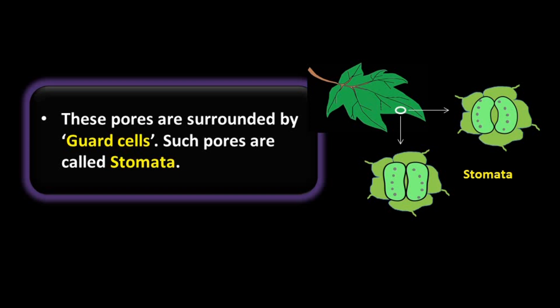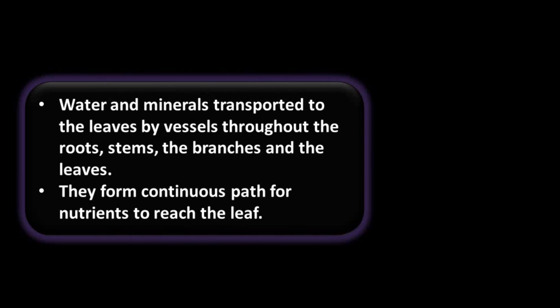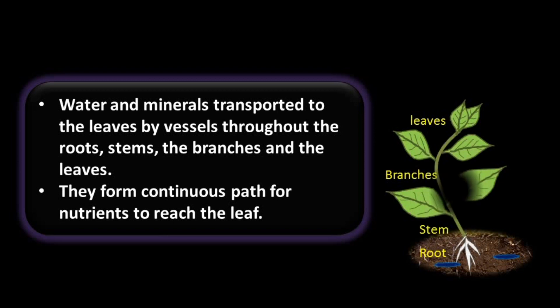There are two states of stomata: when stomata is open and when stomata is closed. During sunlight stomata open, and during night stomata close. Water and minerals are transported to the leaves by vessels through the roots, stems, branches, and leaves, forming continuous paths for nutrients to reach the leaves — the site of photosynthesis.